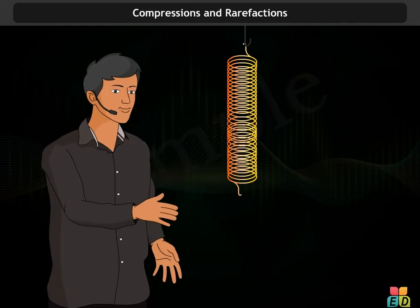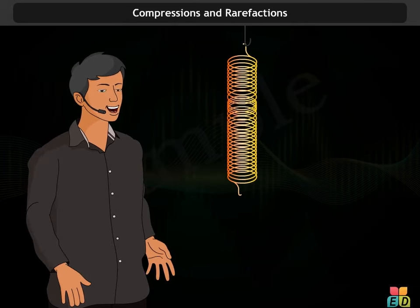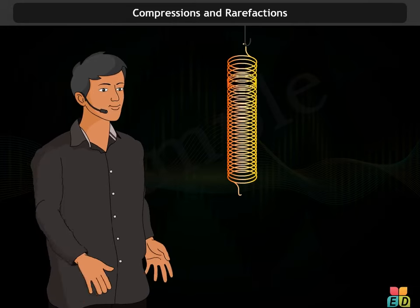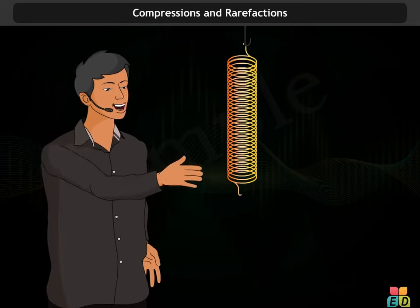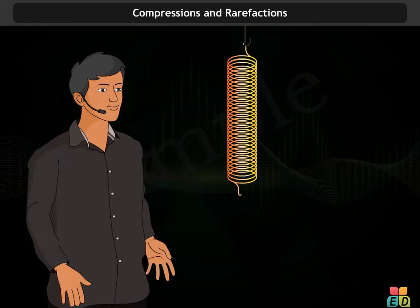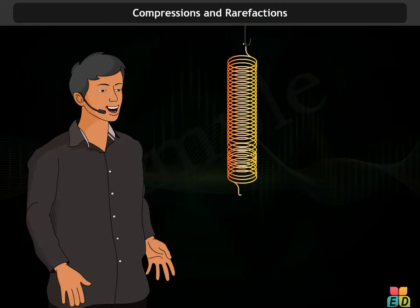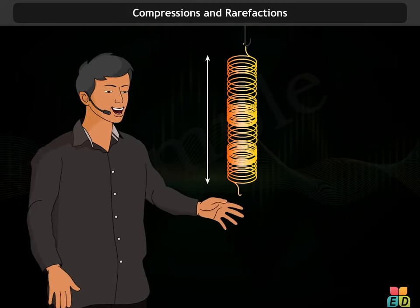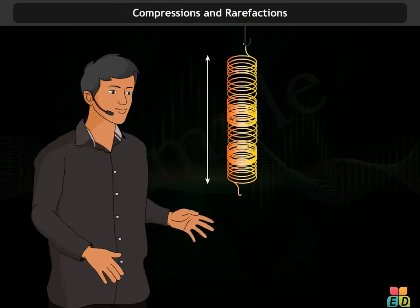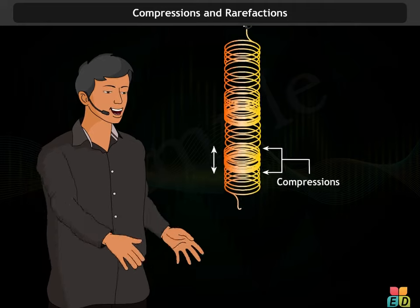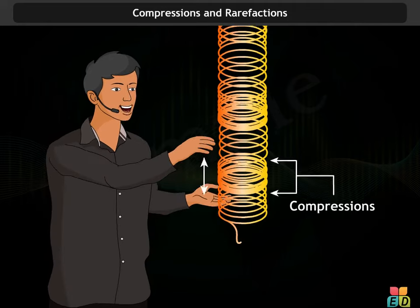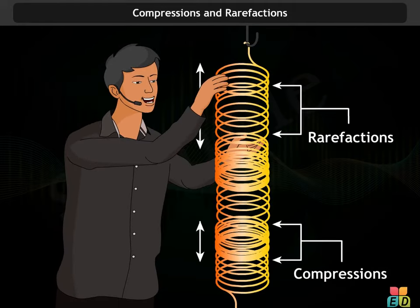You observe that some regions of the coils of the spring come closer to each other, and some regions move apart. The regions which come closer are called compressions, and the others are called rarefactions.